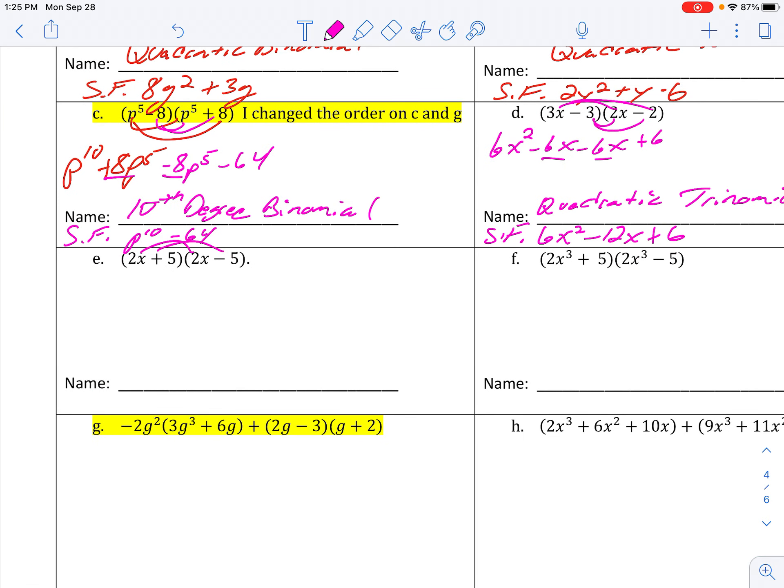Okay. 2x plus 5 times 2x minus 5. 4x squared minus 10x plus 10x minus 25. Put it in standard form. These do cancel out this time. And we end up with a quadratic binomial.